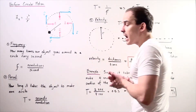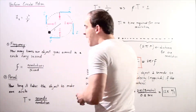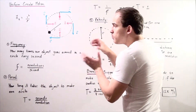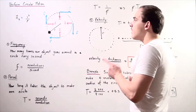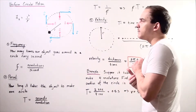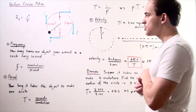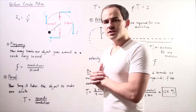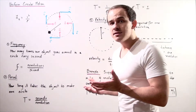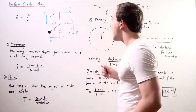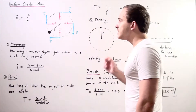Let's talk about two more types of measurements known as frequency and period, and see how these two measurements can help us determine the magnitude of the velocity of an object moving in uniform circular motion. Frequency tells us how many times our object goes around in a circle every single second.